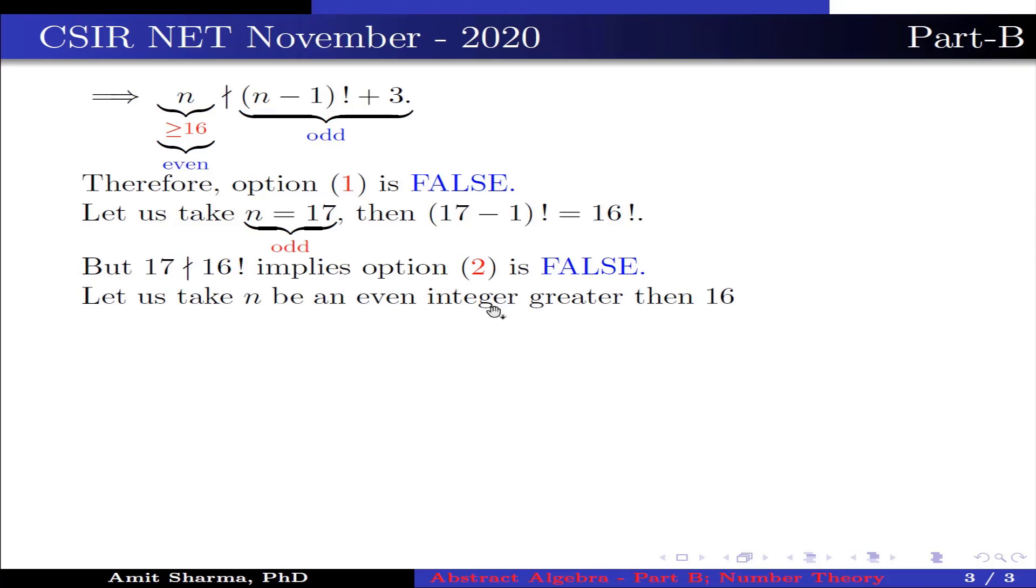Now again, let us take n be an even integer greater than 16. This implies n² is an even integer and n! is also an even integer. This implies n! + 1 is an odd integer.